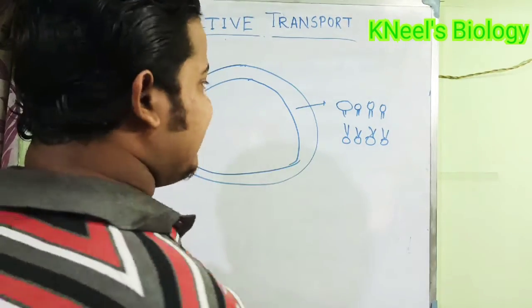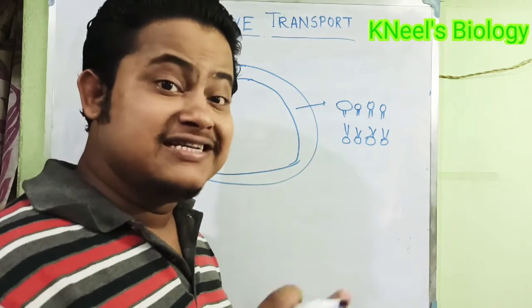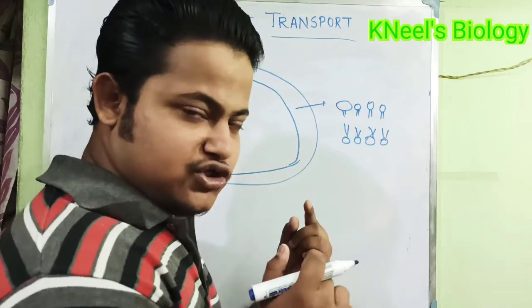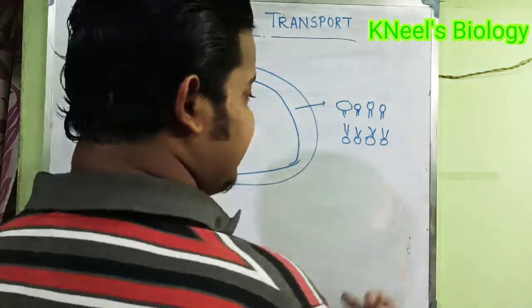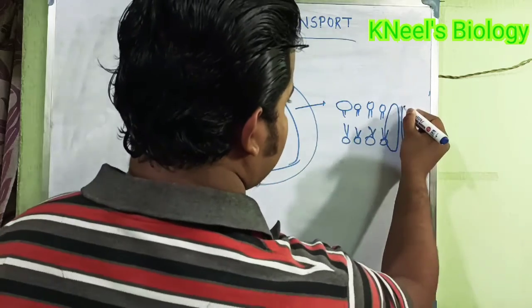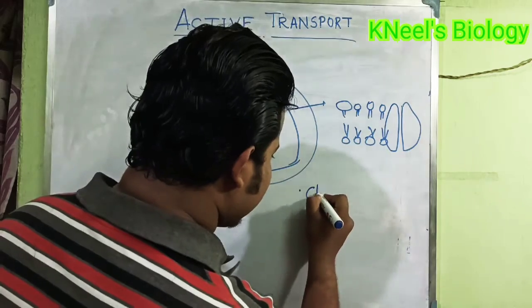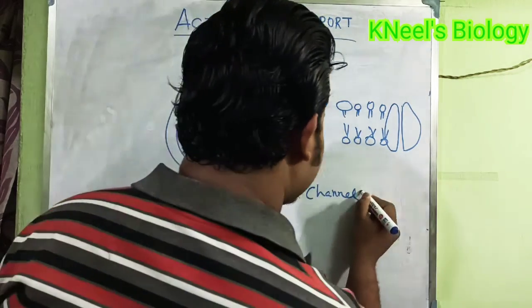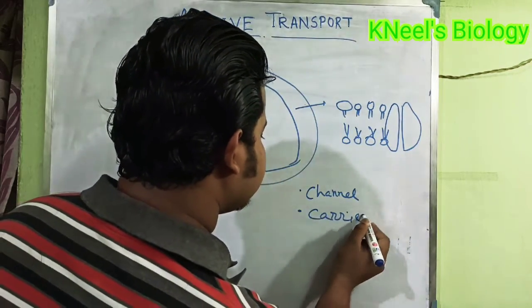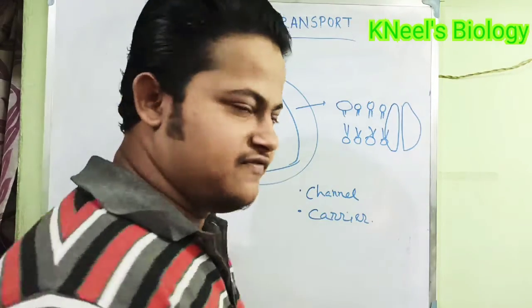Some molecules in passive transport move from higher to lower concentration, but in active transport it is totally opposite — against the concentration gradient. The proteins involved are mainly channel proteins and carrier proteins. Carrier proteins are mainly voltage-gated and ligand-specific.